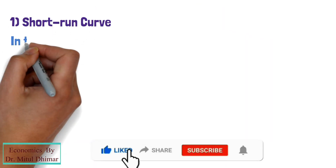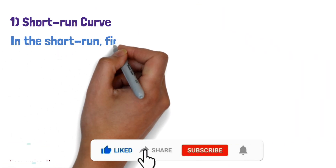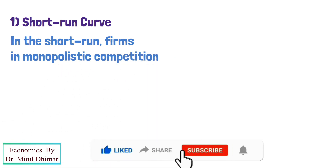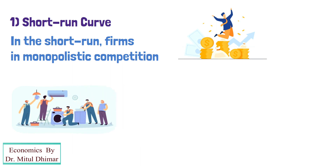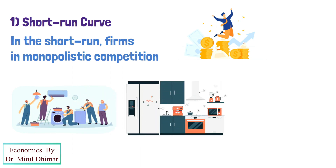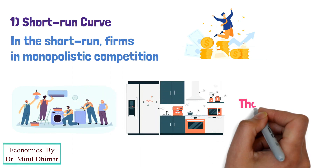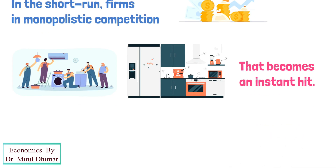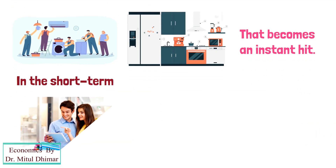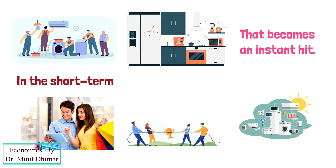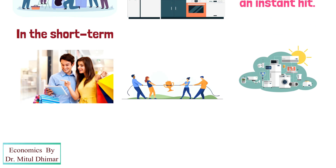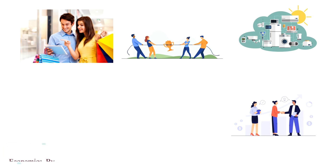First, the short-run curve. In the short-run, firms in monopolistic competition are able to make a supernormal profit. For example, a new appliance manufacturer may produce a new design product that becomes an instant hit — in the short-run, customers flock to buy it. However, competitors acknowledge this and will try to make similar designs, thereby taking customers back.